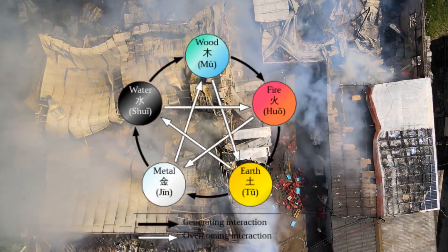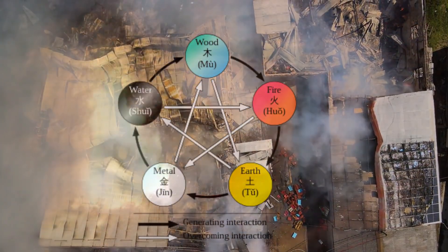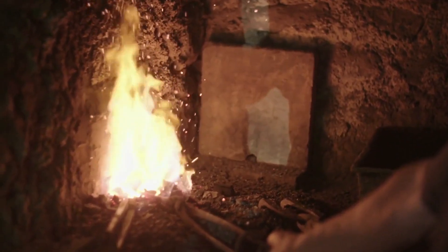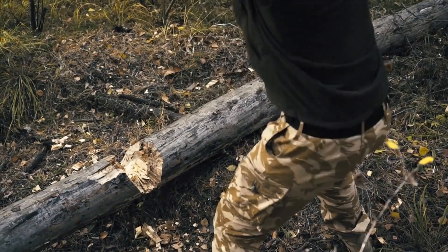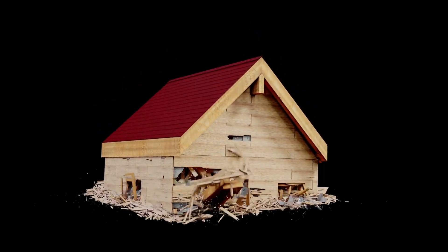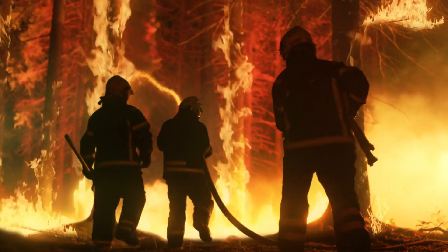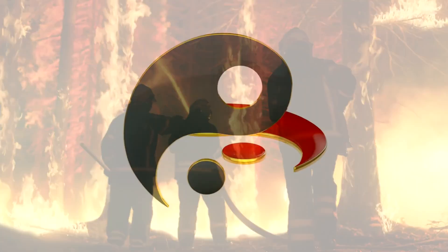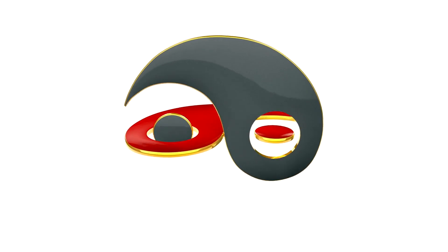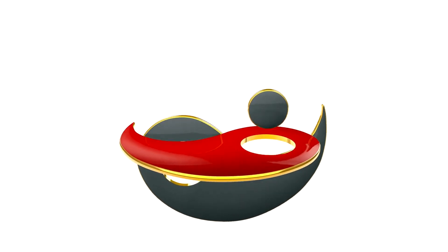And then second, there is the destructive cycle. Fire melts metal. Metal chops wood. Wood breaks earth. Earth absorbs water. Water extinguishes fire. These interactions are crucial for maintaining balance and harmony.